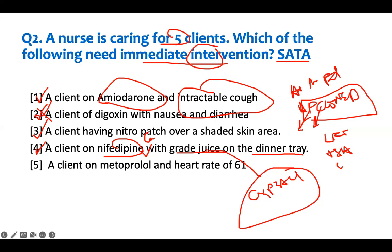A client on metoprolol with a heart rate of 61. This is where they try to trick you — heart rate is 61. Is that greater than 60? Yes. Bradycardia is when heart rate is less than 60. So 61 is still normal; this is not a priority patient. Of course you can check on them and ask why they're not taking their medication, but 61 is normal. Don't get distracted and pick the wrong answer.